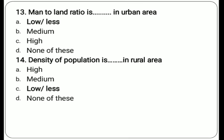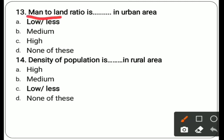Thirteenth question: man to land ratio in urban area. We discussed that man to land ratio is high in rural areas because of agricultural dependence. In urban areas, the man to land ratio is low. Options are low, medium, high, none of these. Correct answer is low.